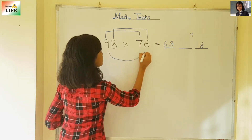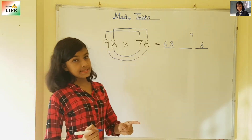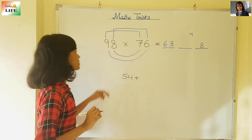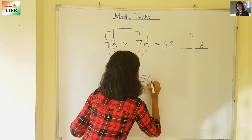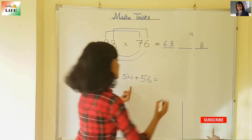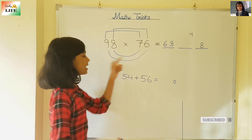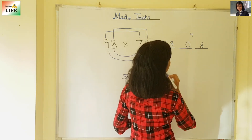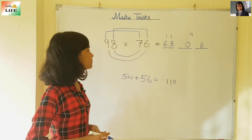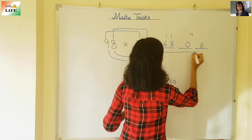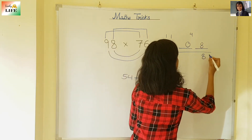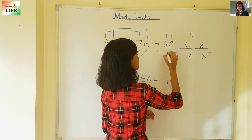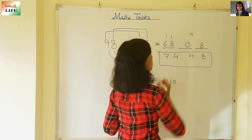Now, cross multiplication: 9 into 6 and 8 into 7. 9 into 6 is 54, plus 8 into 7 is 56. 54 plus 56: 6 plus 4 is 10, write 0 carry 1; 5 plus 5 is 10, plus 1 is 11. So the middle value is 110. We can just write 0 here and carry 11. Now adding up: 8 in the last dash, 4 plus 0 is 4, 3 plus 1 is 4, 6 plus 1 is 7. The answer is 7448.